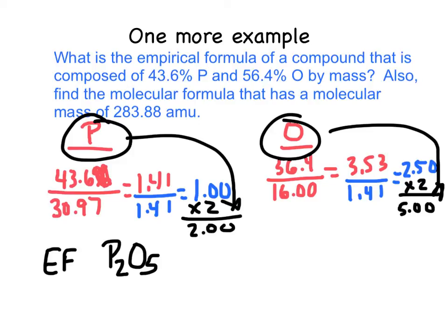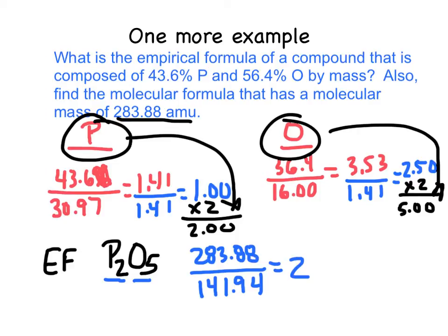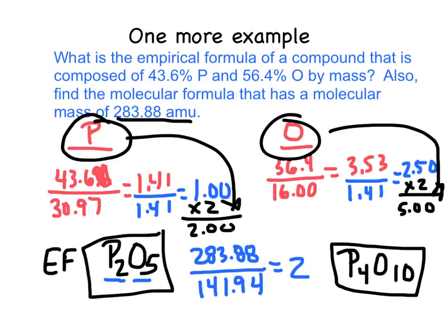But it also wants to know our molecular formula. And our molecular formula, it gives us the mass of 283.88. So I need to find the mass of this empirical formula, P2O5. When I get that off my periodic table, it ends up being 141.94, 30.97 times 2, plus 5 times 16.00. But my molecular mass is 283.88 amu. When I do this, I find out that that goes into that 2 times. And so I have to, for my molecular formula, I have to multiply both of those by 2. It ends up being P4O10 for my molecular formula. So those are my answers right there.